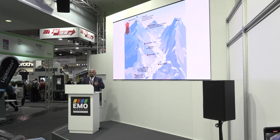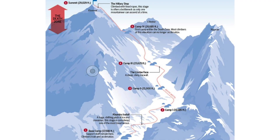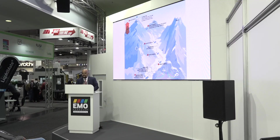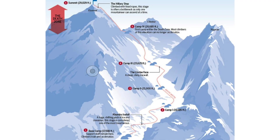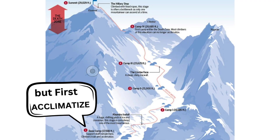Step one is go to the base camp at 17,598 feet. Go to camp two, 19,000-something feet. Camp three, cross the Lhotse face, camp four, camp five, and then you're at the summit. So this is how you reach Mount Everest. Easy. But first — acclimatize.